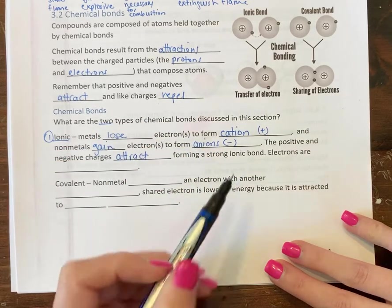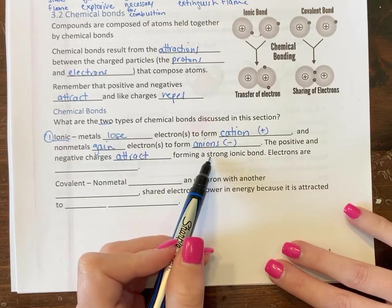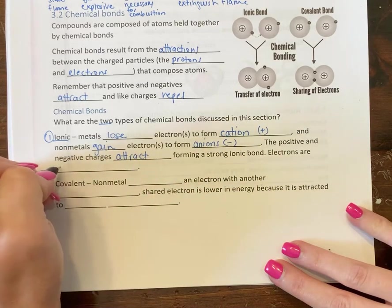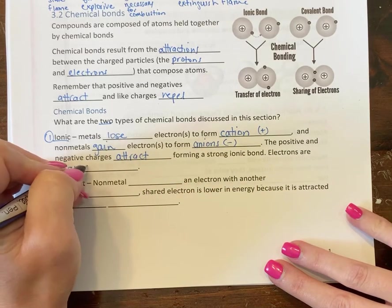And they're going to form an ionic bond. Ionic bonds are very strong. So in an ionic bond, the electrons are considered to be transferred.